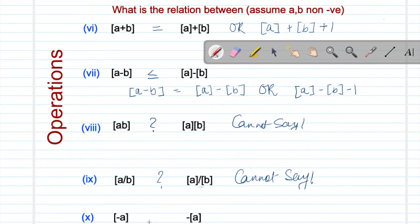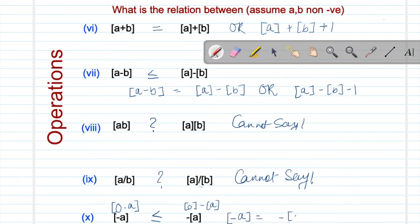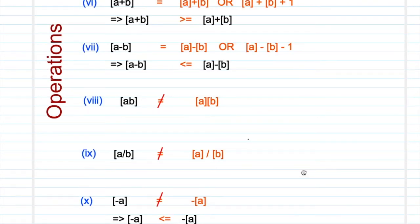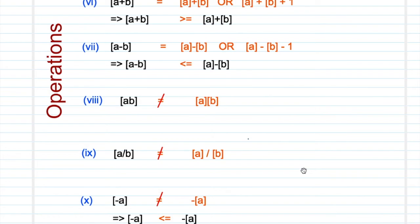Property number 10 follows from property number 7, where a = 0 and b = a. So this is basically 0 − a, and we have to find the relation between ⌊−a⌋ and −⌊a⌋. The relationship is less than or equal to, and in fact ⌊−a⌋ equals either −⌊a⌋ or −⌊a⌋ − 1. This is the final summary of the different properties.